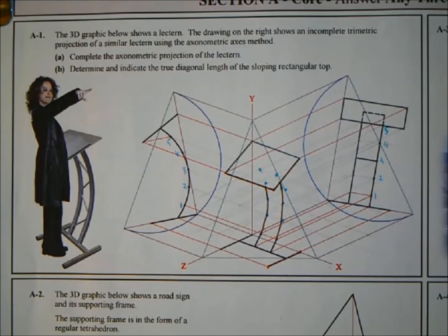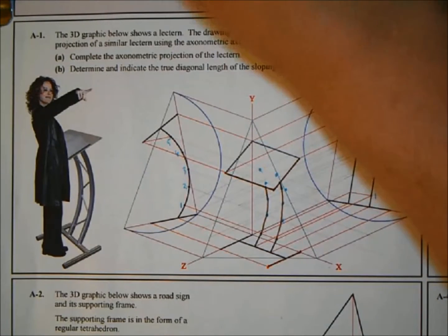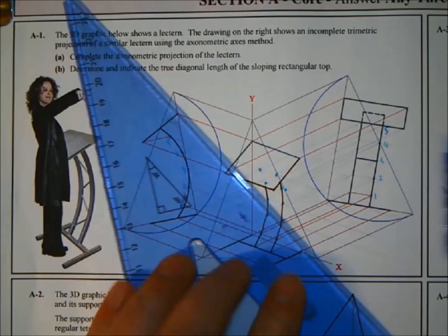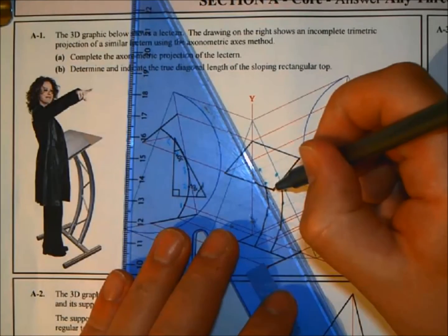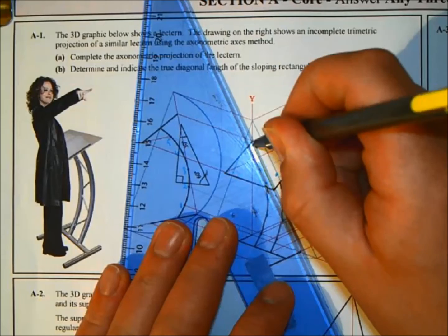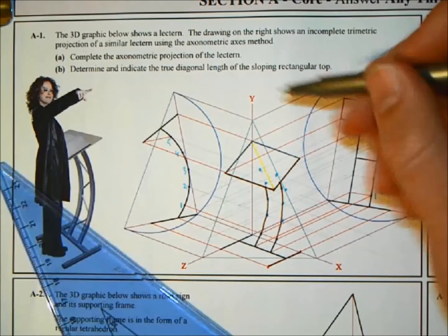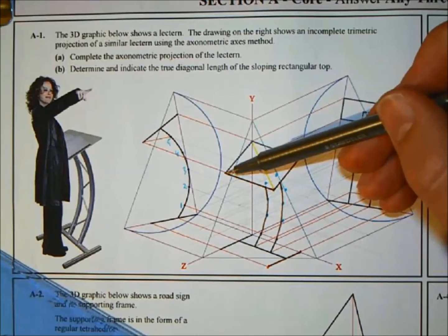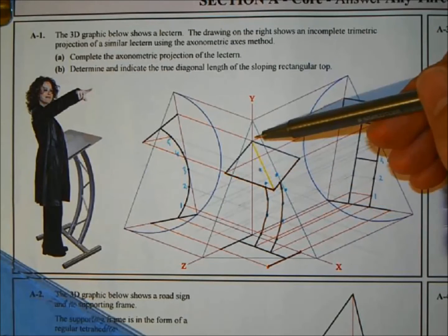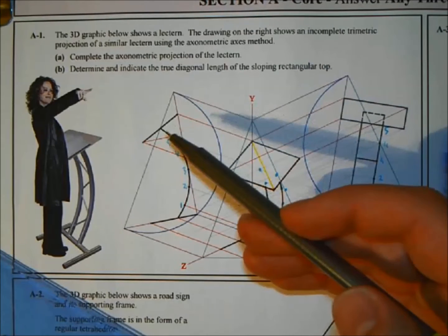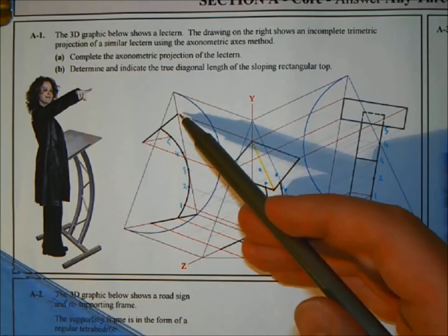And that is the 3D of it done. Complete the axonometric projection of the lectern, that's it done. That's all you want to see, there will be no hidden detail. (b) Determine and indicate the true diagonal length of the sloping rectangular top. So diagonal means diagonal length of it.